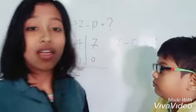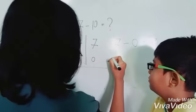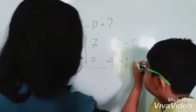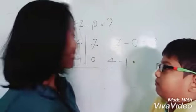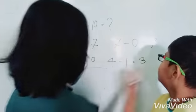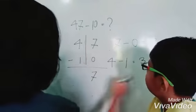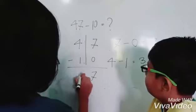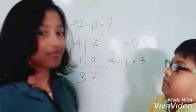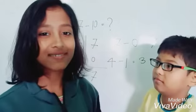Now calculate the tens place. That is, if we subtract 1 from 4. Thurston, what's the answer? 3. Right. So, the ones place gives 7 and the tens place gives 3. Thurston, so what's the answer? 37. Right. So, that's really easy, right?